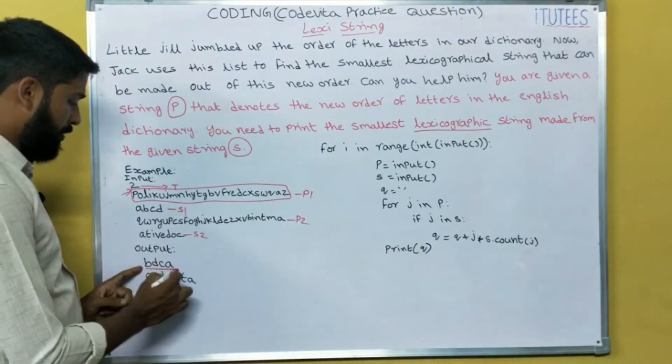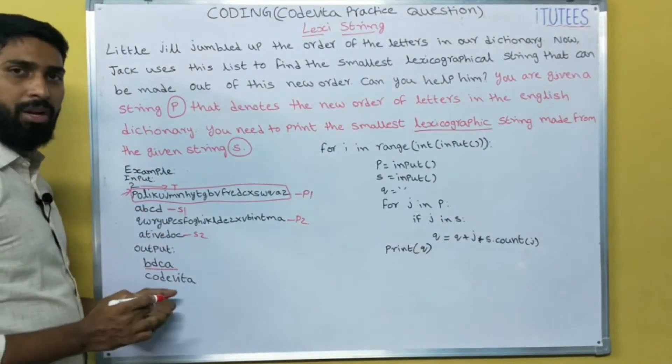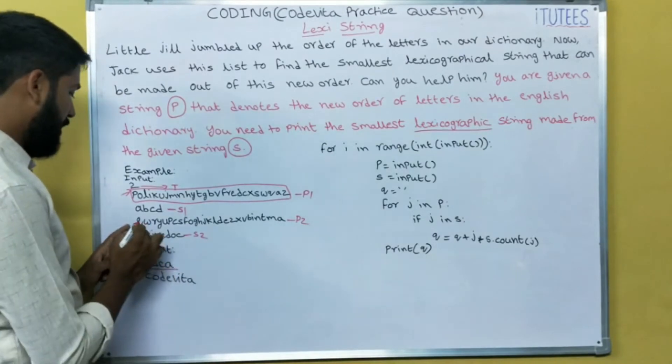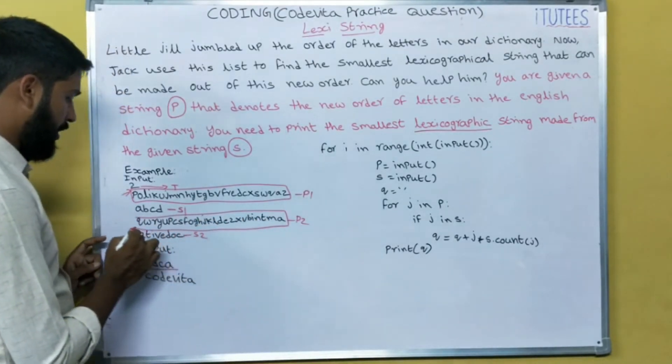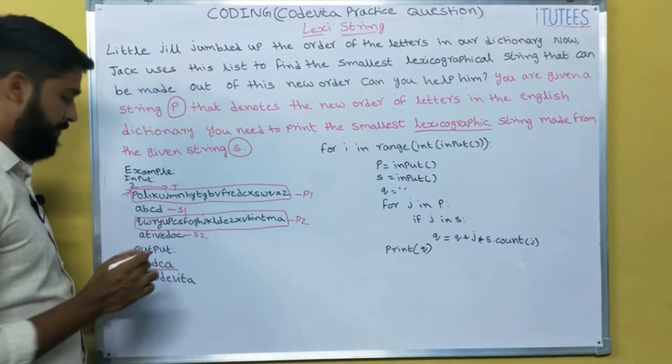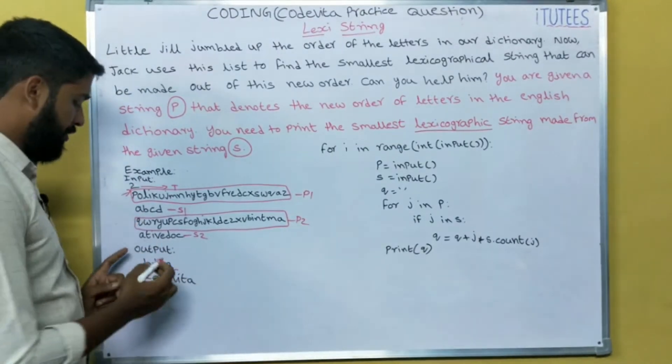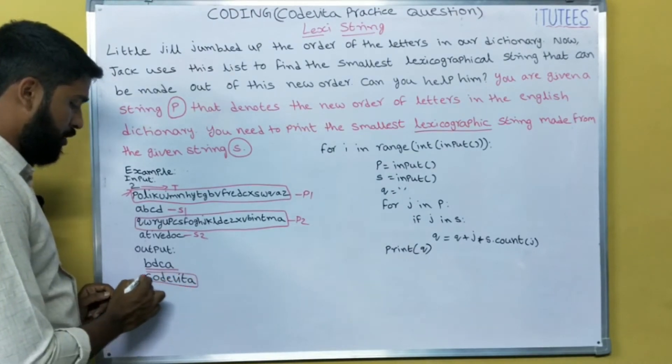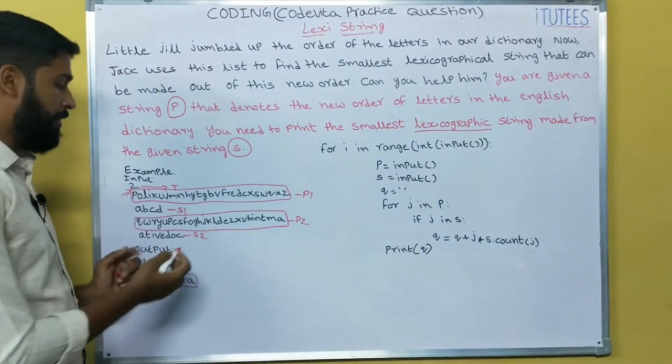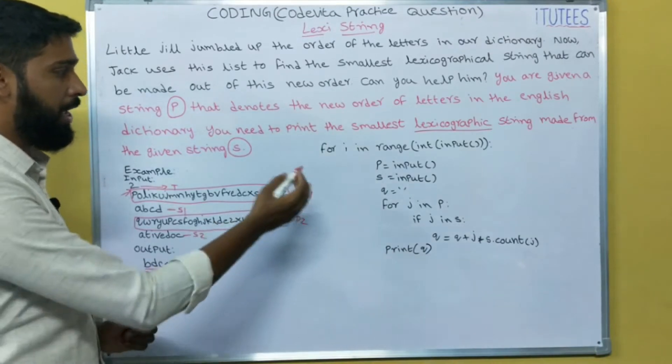Now we are going to find the lexicographic string. ABCD, this is the output. BDC is the lexicographic string. Similarly, this is the second test case. This is the jumbled order of alphabets in the dictionary. This is the string S2. Now the lexicographic for S is corbid. So now we can see how we can get these outputs with the help of the program.